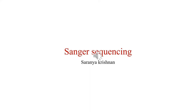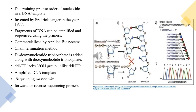In this presentation, I am going to talk about Sanger sequencing. Sanger sequencing is a process of determining the precise order of nucleotides in a DNA template. This process was invented by Frederick Sanger in the year 1977, and it is the most common and widely used sequencing method. Only fragments of DNA can be amplified and sequenced using primers. This process was commercialized by Applied Biosystems. Sanger sequencing is also known as the chain termination method.